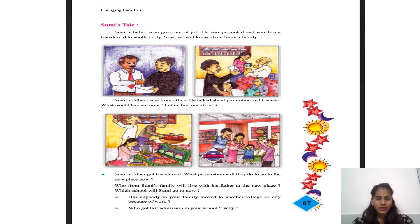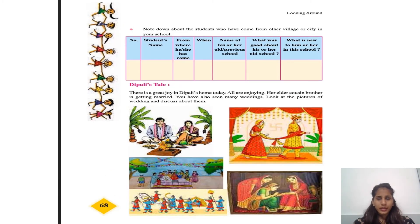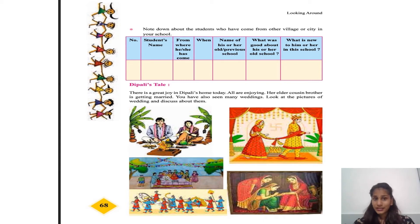Who got the last new admission in your school? If you have a child in your school who came from another place, you have to write their information. Find out about students who have come from other villages or cities and complete the table with information about them in your textbook.